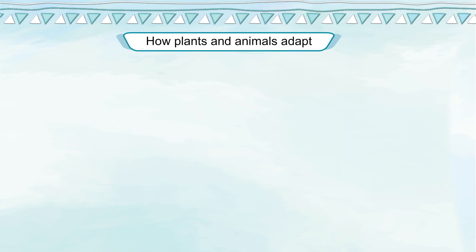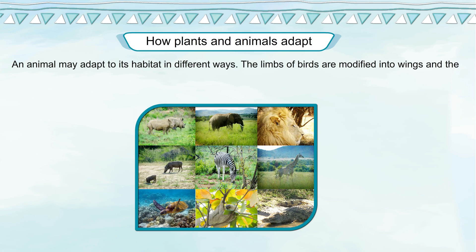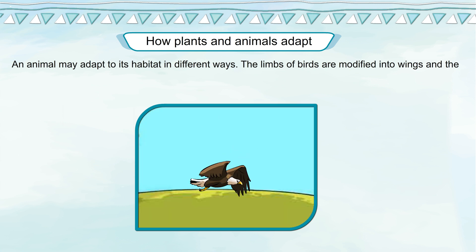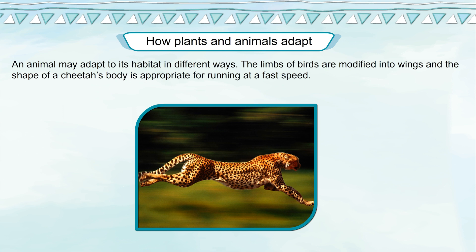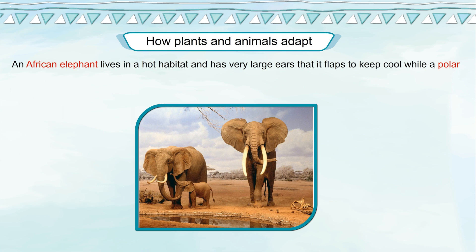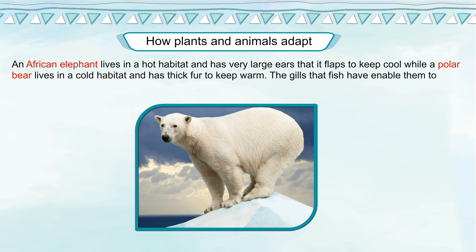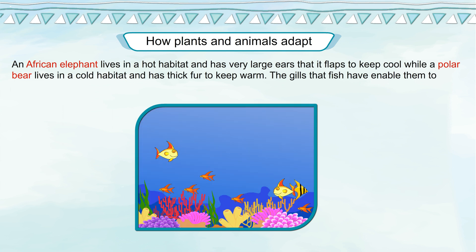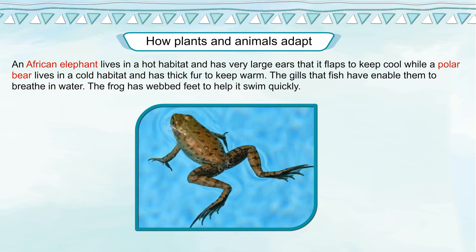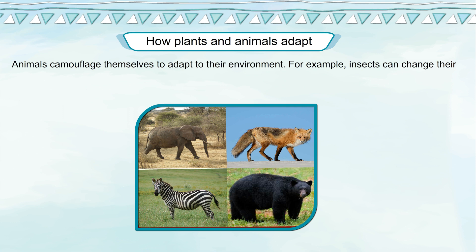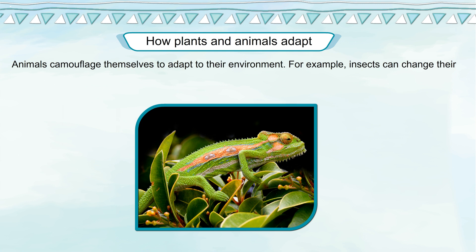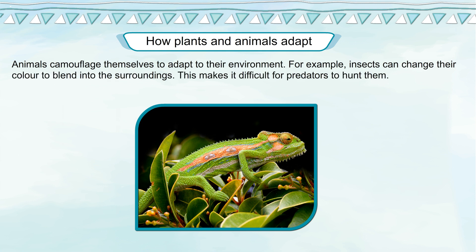How Plants and Animals Adapt: An animal may adapt to its habitat in different ways. The limbs of birds are modified into wings, and the shape of a cheetah's body is appropriate for running at fast speed. An African elephant lives in a hot habitat and has very large ears that it flaps to keep cool, while a polar bear lives in a cold habitat and has thick fur to keep warm. The gills that fish have enable them to breathe in water. The frog has webbed feet to help it swim quickly. Animals camouflage themselves to adapt to their environment — for example, insects can change their color to blend into the surroundings, making it difficult for predators to hunt them.